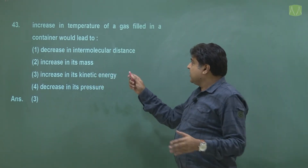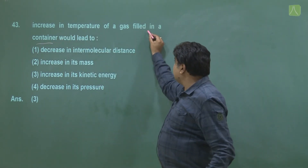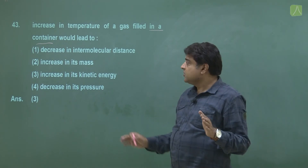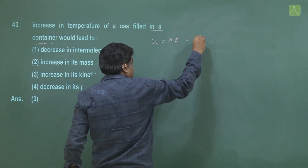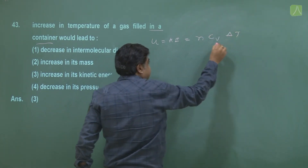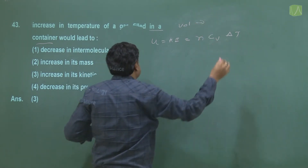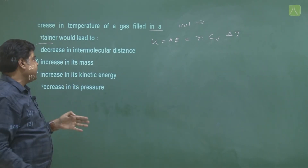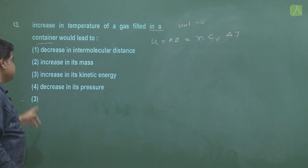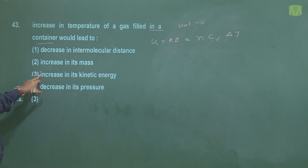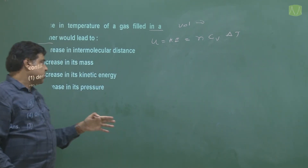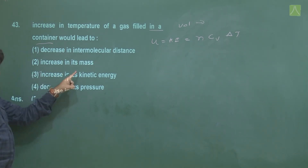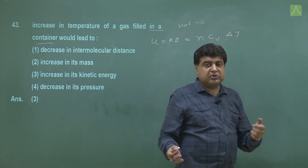Easy theory question: gas is filled in a container, meaning volume is constant. If we increase temperature at constant volume, what increases? Since volume is constant, molecular distance does not decrease and mass stays constant. Increasing temperature at constant volume also increases pressure, so that option is wrong. The correct answer is: increase in its internal energy (kinetic energy). The right option is third.